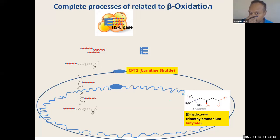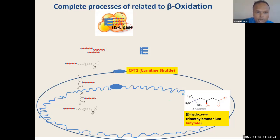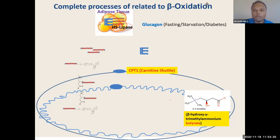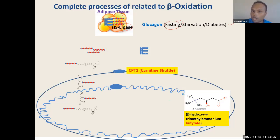What will happen in adipocytes? The hormone present — hormone-sensitive lipase — will actually break down the triglyceride that is present inside the adipocytes, which are full of it. This triglyceride will be broken down under the influence of glucagon. Glucagon signals all these conditions.